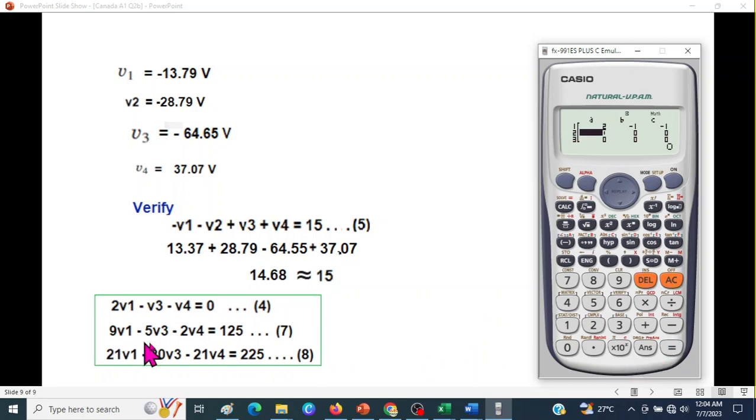Next is 9 minus 5 minus 2.125. So, 9 minus 5. Ultrine minus 2. Equal. And 125. And 5 equal. So, the second row is done. Then 21. 21 equal. Minus 20. Equal. Minus 21. Equal. 2 to 5. 2 to 5. So, all the entries are done.